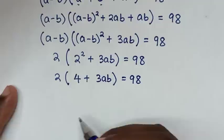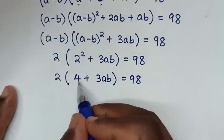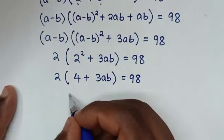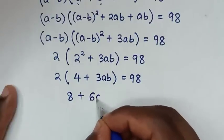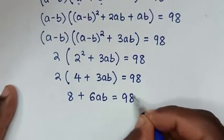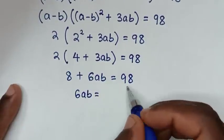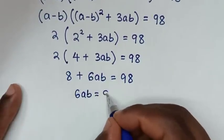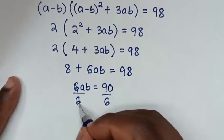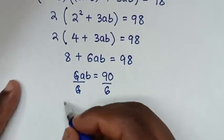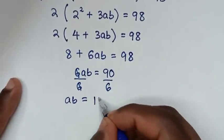Then 6ab equals 98 minus 8, which is 90. Dividing both sides by 6, ab equals 90 divided by 6, which is 15. So ab = 15.